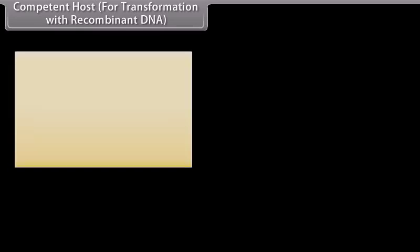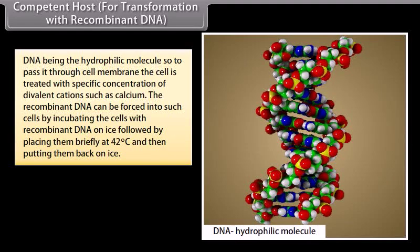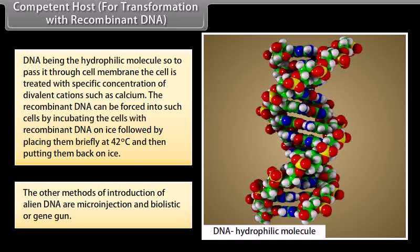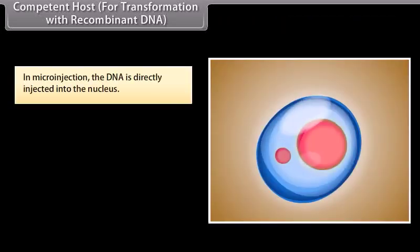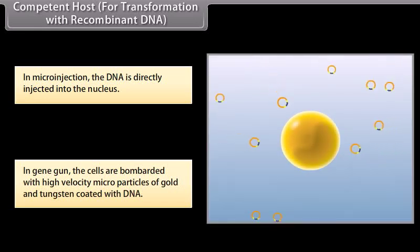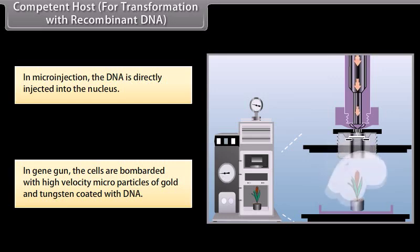Competent host for transformation with recombinant DNA. DNA being a hydrophilic molecule, to pass it through the cell membrane, the cell is treated with a specific concentration of divalent cations such as calcium. The recombinant DNA can be forced into such cells by incubating the cells with recombinant DNA on ice, followed by placing them briefly at 42°C and then putting them back on ice. Other methods of introduction of alien DNA are microinjection and biolistics or gene gun. In microinjection, the DNA is directly injected into the nucleus; in gene gun, the cells are bombarded with high-velocity microparticles of gold and tungsten coated with DNA.